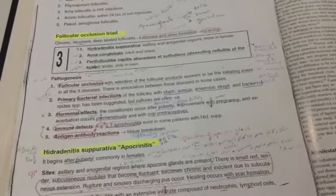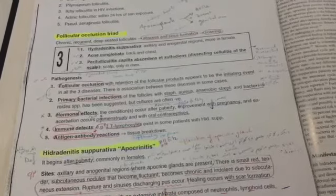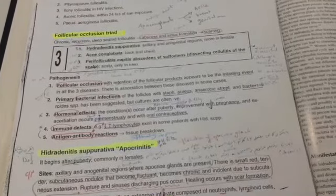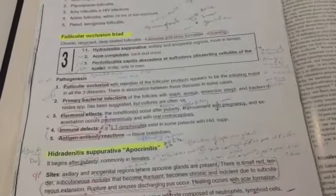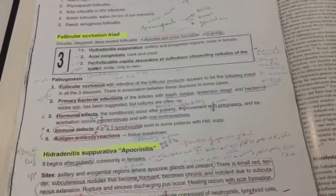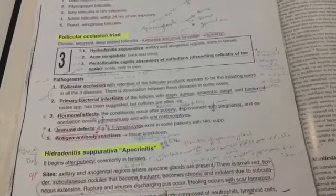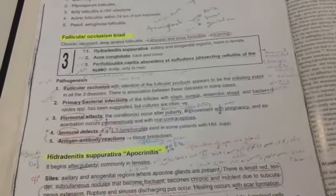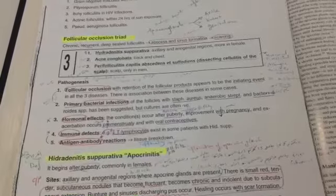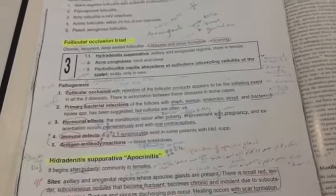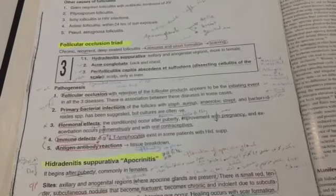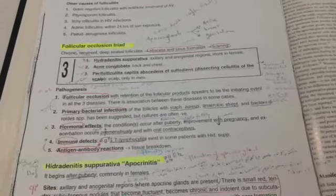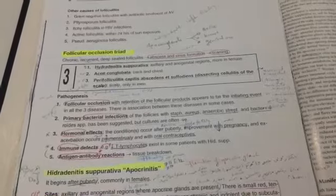The pathogenesis of which are follicular occlusion with retention of the follicular products appears to be the initiating events in all three diseases, and there is association between these diseases in some cases. Second is primary bacterial infection of the follicle: staph aureus, anaerobic strep and bacteroides, but cultures are often negative. Hormonal effects: the conditions occur after puberty, improvement with pregnancy, and become worsened with premenstrual and with oral contraceptives. Immune effects: there is decreased T lymphocytes that exist in some patients with hidradenitis suppurativa, and there is antigen antibody reactions leading to tissue breakdown. There is inflammatory response.